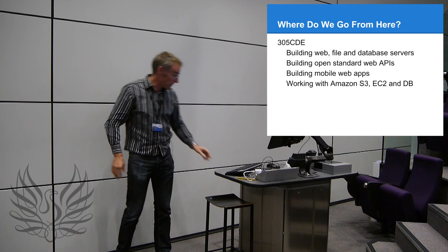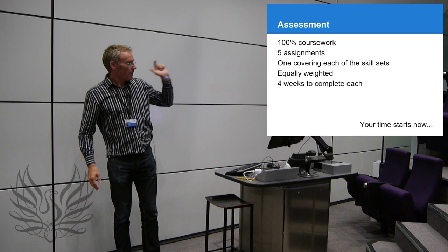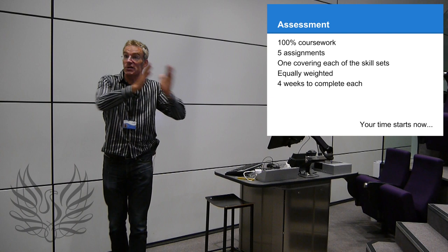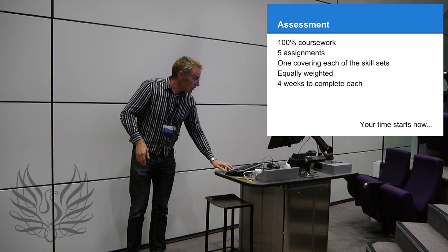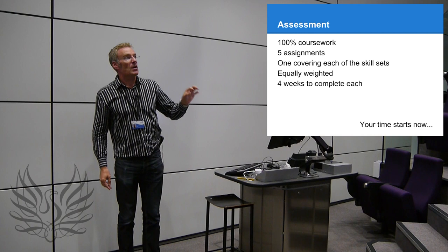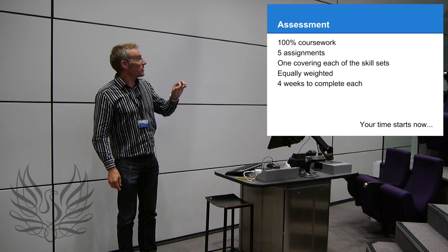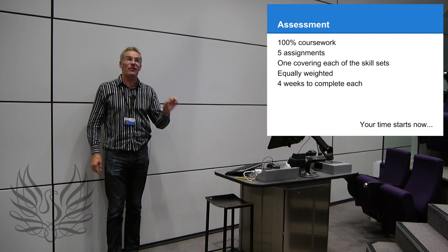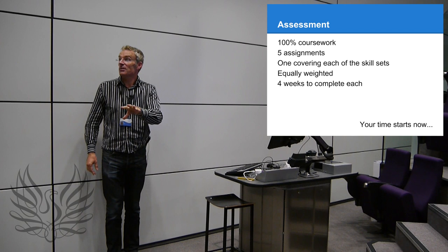It's 100% coursework, five assignments equally weighted, four weeks on each assignment. Each one's worth 20%, so we're going to keep things nice and tight. You're given a lab sheet to work on in your labs — the lab sheet is the assignment. Each week you're going to do 25% of one of your assignments, so if you turn up to the lab you've effectively got two hours of time to work on the assignment with help and support.